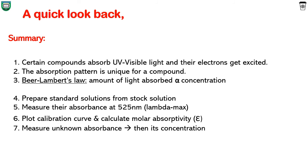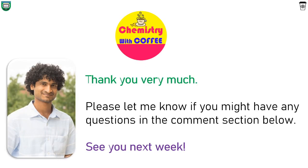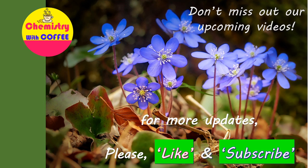Let's review what we have learned today. Certain compounds absorb UV visible light and their electrons get excited. The absorption pattern and lambda max are unique for a specific compound. Beer-Lambert's law states that the amount of light absorbed is directly proportional to the concentration of the solution. For the experimental procedure: prepare standard solutions from the stock solution, measure their absorbance at the lambda max, plot a calibration curve and calculate epsilon, then measure the unknown absorbance and calculate the concentration of the unknown solution. Thank you very much for your attention. Please feel free to post any suggestions or questions in the comment section below. See you next week with another interesting and important topic in Chemistry. Please don't forget to like and subscribe to our channel Chemistry with Coffee.